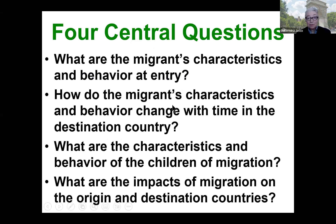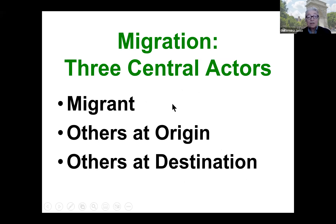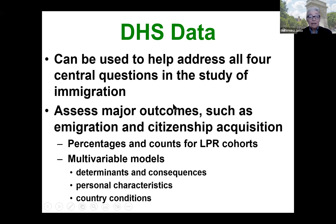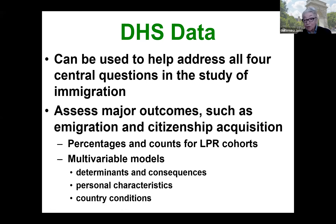There are four central questions about the migrant and progress over time. Three central actors: the migrant, and also other people at both origin and destination. We're going to be looking at DHS data and do two kinds of things. Today, only percentages and counts for LPR cohorts, but there's enough administrative data to estimate real multivariable models — bringing in personal characteristics, educational history, marital history, etc. We can always add country conditions, linked via the country variables for immigrants in the DHS data.